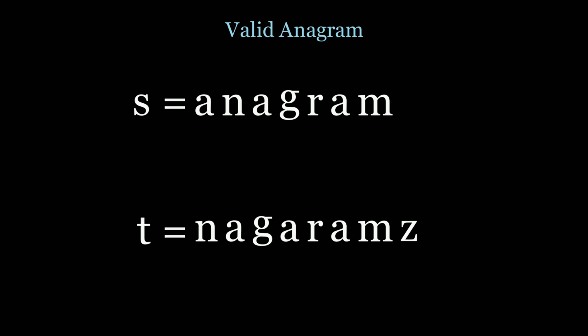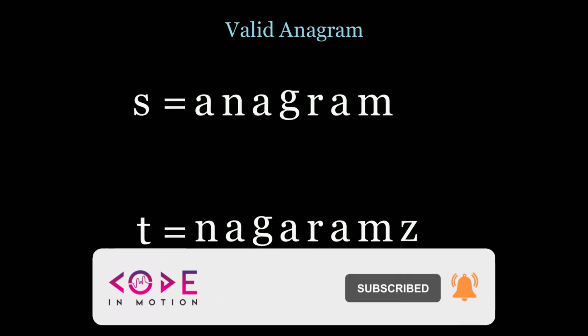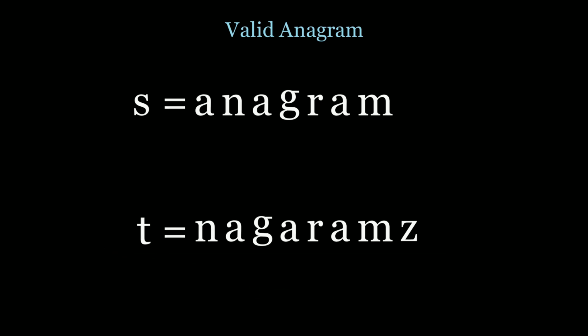We have two strings and we want to determine if they're anagrams without sorting, so we want an algorithm that scans s and t only once for O(n + m) time complexity. We know that for two strings to be anagrams they need to have the same letters and the same frequency of those letters. A hash map gives us constant time search for a key and keeps track of an associated value, so we'll store each letter from s with its corresponding frequency.